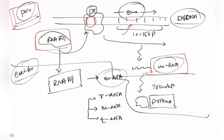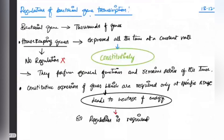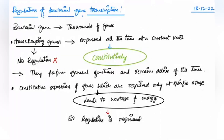We will also determine whether the lac operon is positively or negatively controlled. Before going to regulation, I want to review how prokaryotes use RNA polymerase to bind to the promoter region, transcribe through the gene to synthesize mRNA, and then translation produces the protein product that acts as an enzyme for certain metabolism.